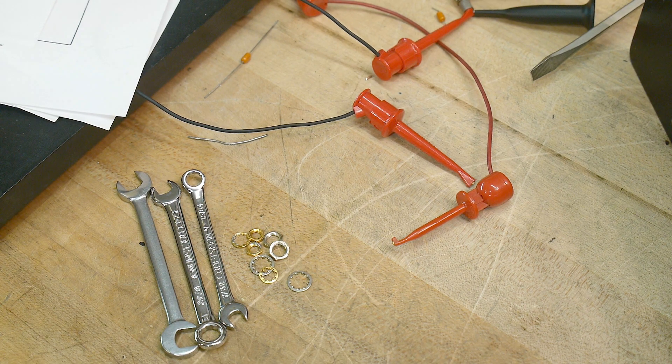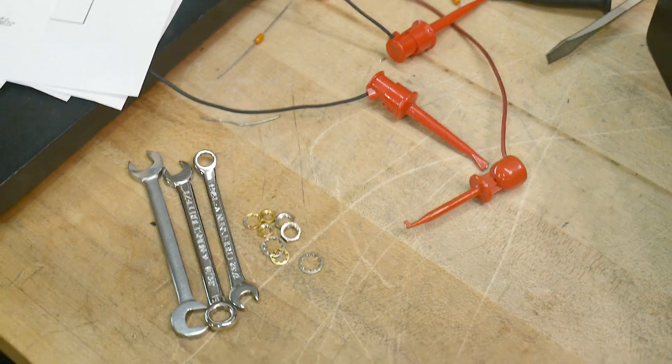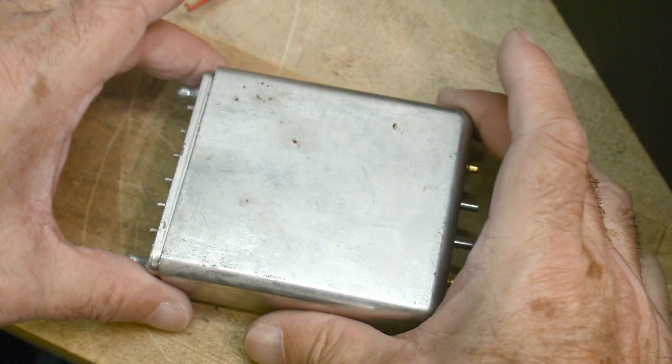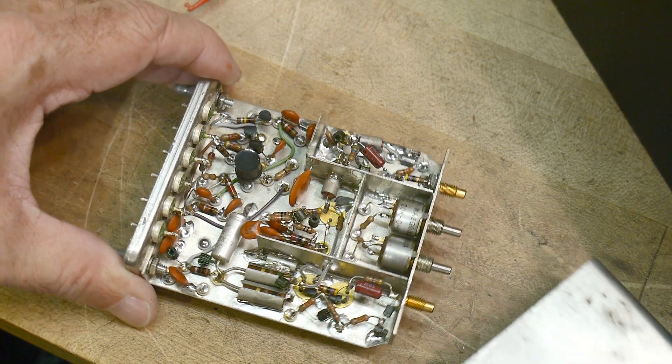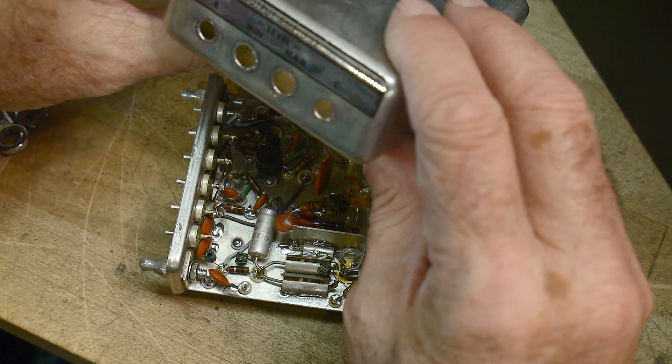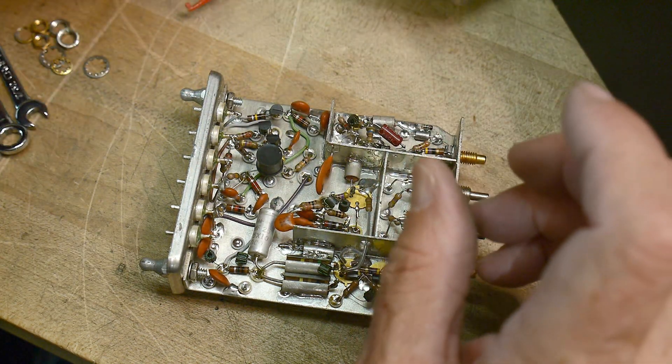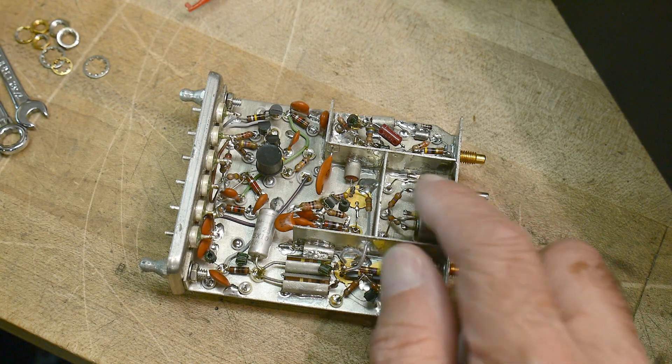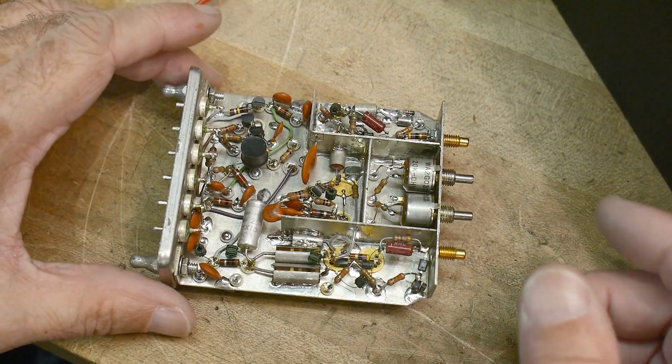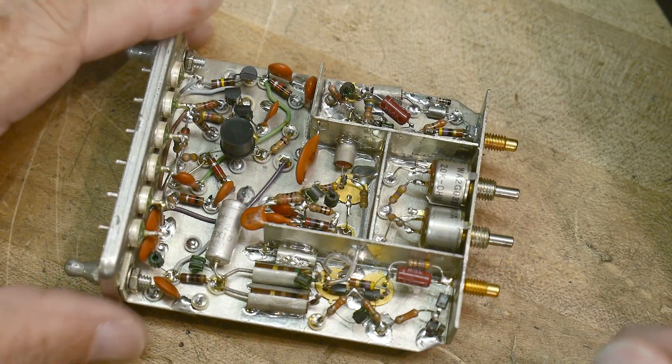So I got out some proper tools to take those little nuts off. And this is what the M10H module looks like - the output amplifier. Some input, output, and some adjustments. Zoom in a little further. There we go.